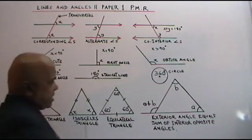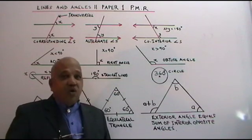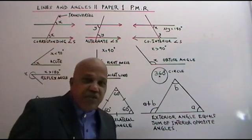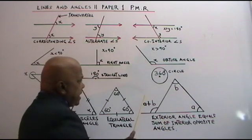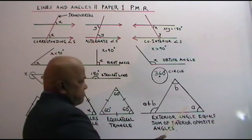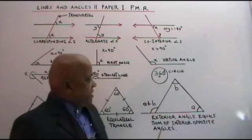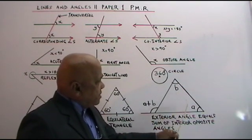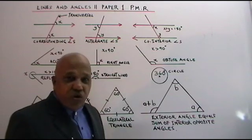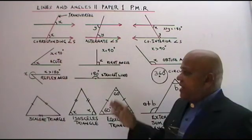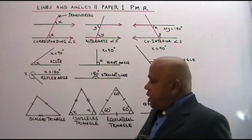Now we come to another theorem — very, very important, not just in PMR but also in SPM. If this angle is A and this angle is B, the exterior angle is A plus B. That is, if this angle is 20 degrees and this angle is 30 degrees, the exterior angle is 50 degrees. If you apply all this, you should be able to handle PMR questions on this topic easily.